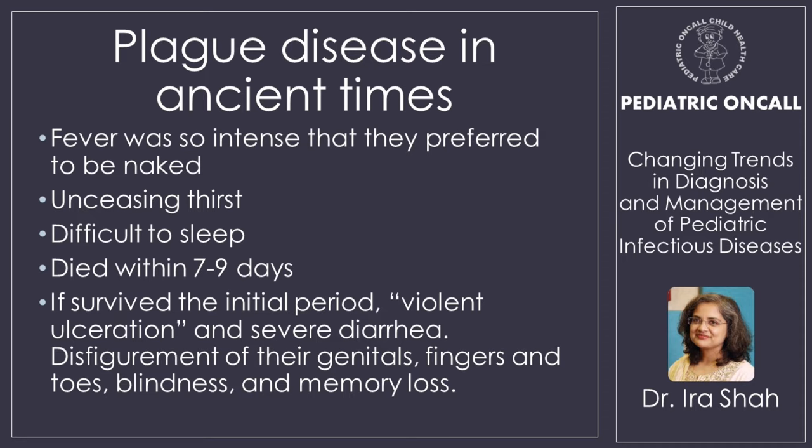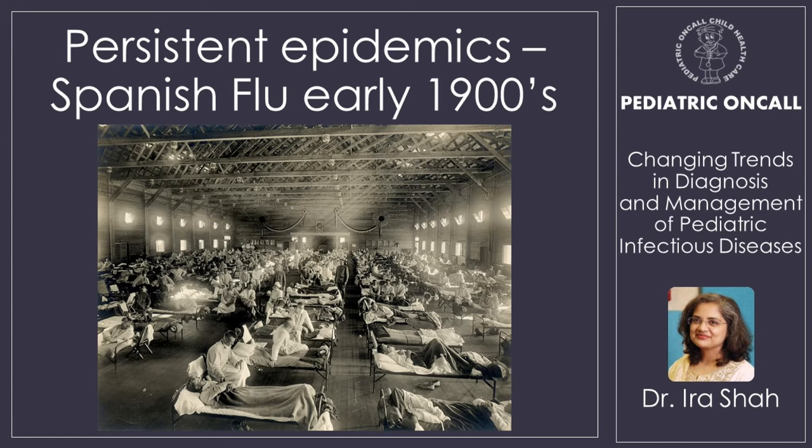Plague caused fever so intense that patients preferred to be naked, with unseasoned thirst, difficulty sleeping, and they died within seven to nine days. If they survived the initial period, they would have disfiguration of their genitals, fingers, and toes, blindness, and memory loss so severe they did not know who they were. How do we treat it now? Just one tetracycline — and plague is gone.